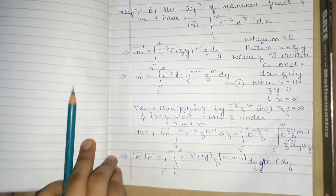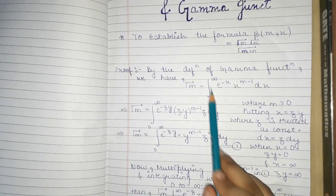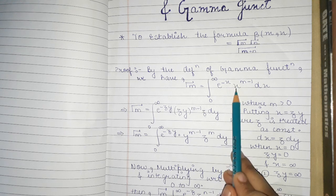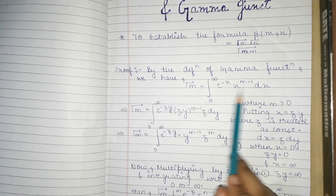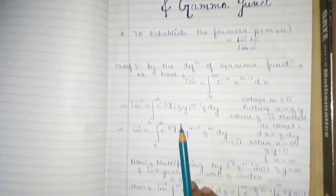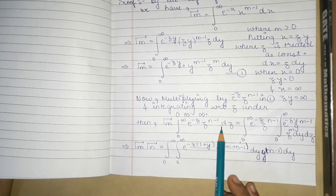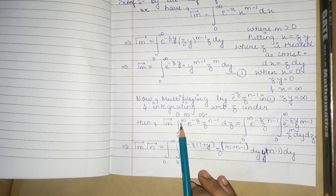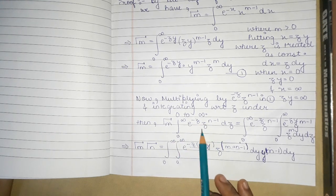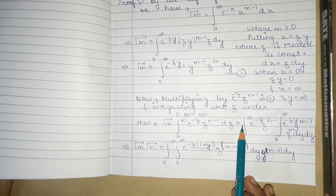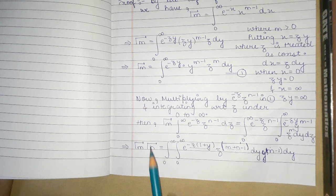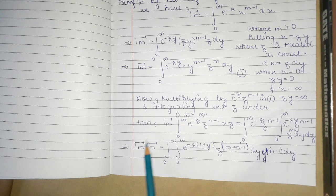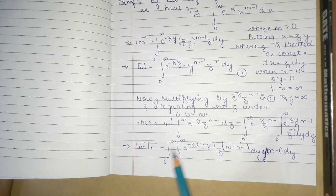Now, from the definition of the Gamma function, we know that the integral from 0 to infinity of e^(-z) z^(n-1) dz equals Gamma(n). So the left-hand side becomes Gamma(m) times Gamma(n).